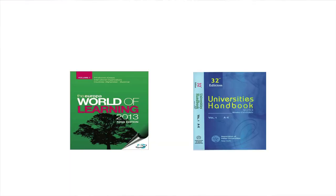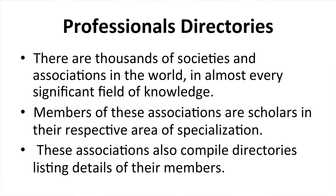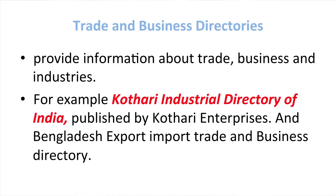Examples of academic institution directories include Europa World of Learning, an international directory, and University's Handbook, a national directory. Professional directories list details of members of societies and associations across various fields of knowledge. Trade and business directories provide information about trade, business, and industries. For example, Kothari Industrial Directory of India, published by Kothari Enterprises, is an example of a trade and business directory.